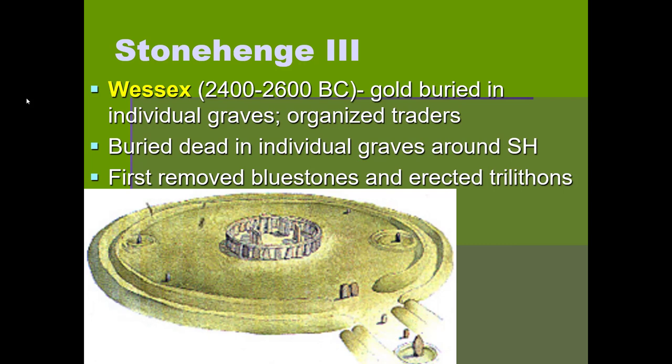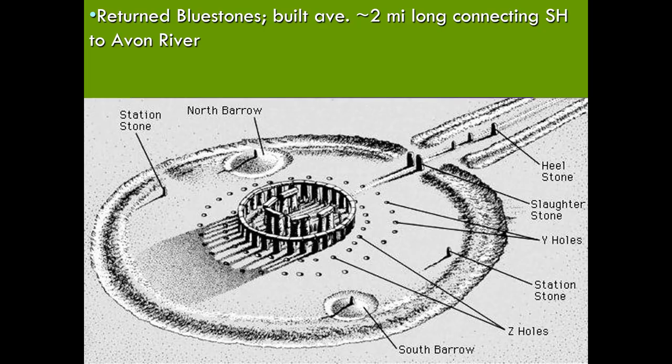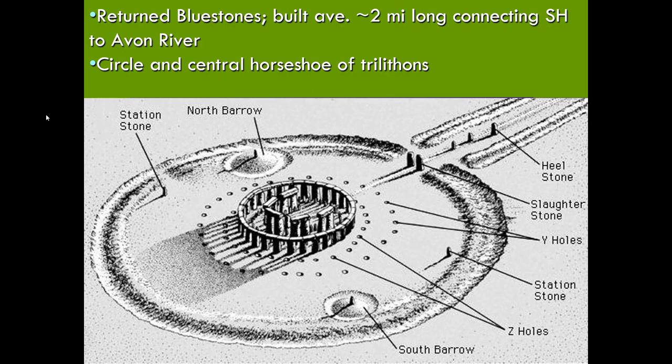Looking at the diagram of this Stonehenge stage, you see the henge around Stonehenge, the heel stone, the station stones along the henge, and the circle and inner horseshoe of trilithons, with no blue stones. On the next slide you see a totally completed Stonehenge — the blue stones are then returned. There's a circle of them within the trilithon circle, and a horseshoe within the trilithon horseshoe as well.